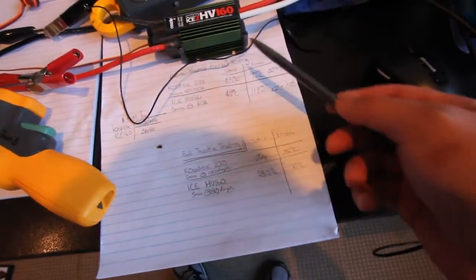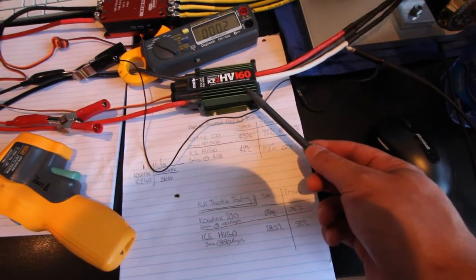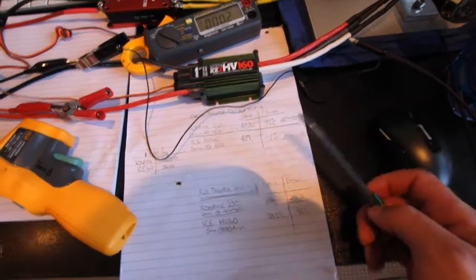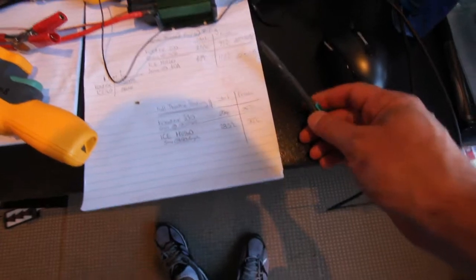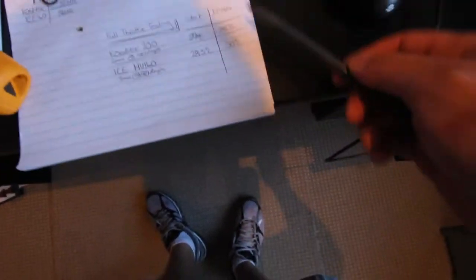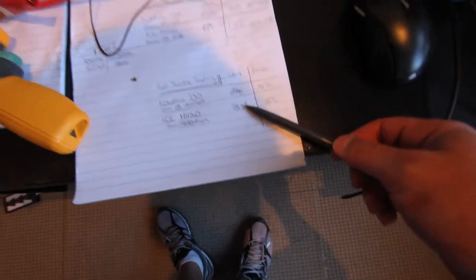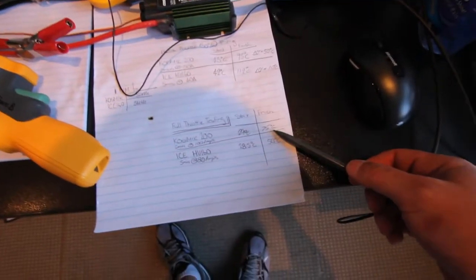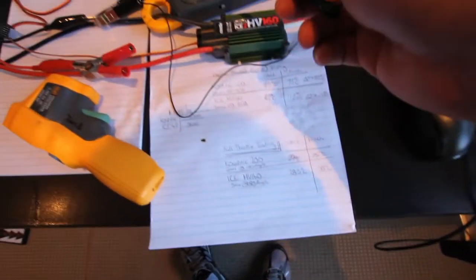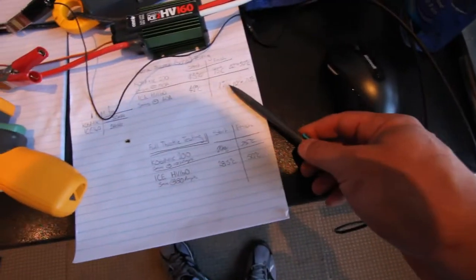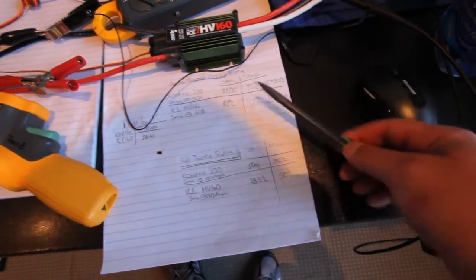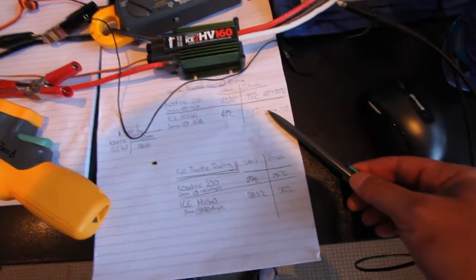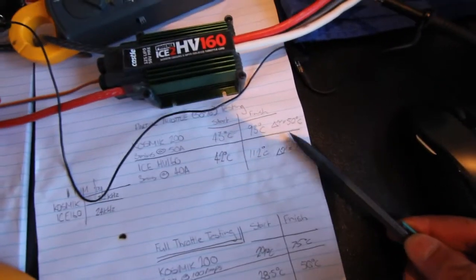Which is quite significant because we're only running at 40 amps and it's a 160 amp speed control but anyway as you can see, the HV160 outperforms the Cosmic 200 at full throttle, the Cosmic 200 outperforms the HV160 at partial throttle.